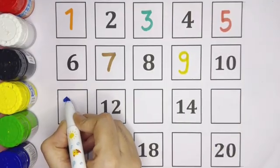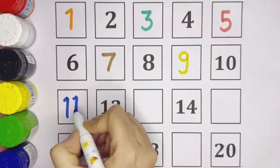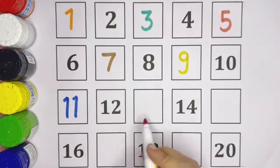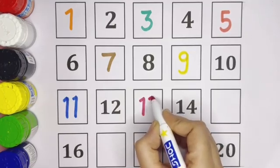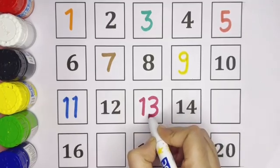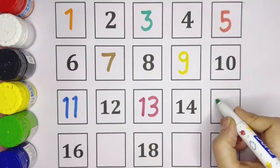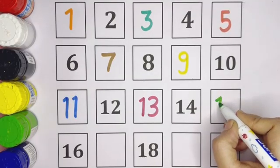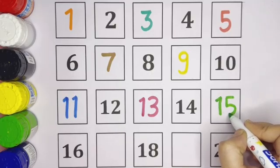Ten. The missing number is eleven, one-one, eleven. Twelve. After twelve, thirteen. The missing number is thirteen. Fourteen, fourteen. Then fifteen, one-five, fifteen. The missing number is fifteen.